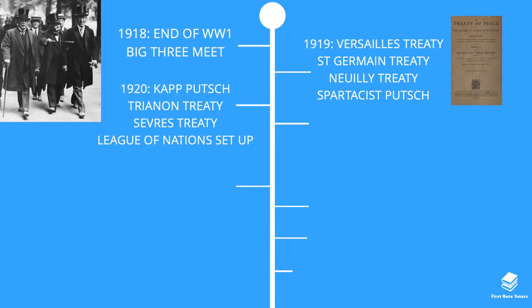The Trianon Treaty affected Hungary, the other half of the Austro-Hungarian Empire, causing it to lose more land. In 1920 there was also the Treaty of Sèvres imposed upon the Ottoman Empire. It lost land, leading to the formation of Kurdistan, Armenia, Hejaz, Iraq, and Palestine became a British mandate territory, while Syria became a French mandate territory. Also in 1920, the League of Nations was set up.